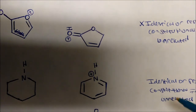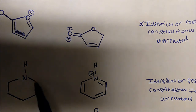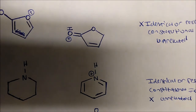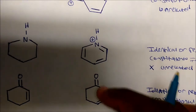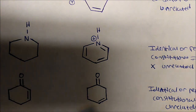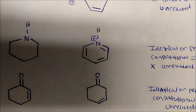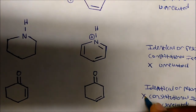So these are not identical resonance. Are they constitutional isomers? We define constitutional isomers as the same molecular formula but different structure. Since these have an abundance of hydrogen versus this one, they're unrelated — they're not the same molecular formula so they can't be constitutional isomers. Now how about this one? I can see these are the same molecular formula — the only thing I did was move the pi bond from here to here. Same molecular formula, different structure: these are constitutional isomers.